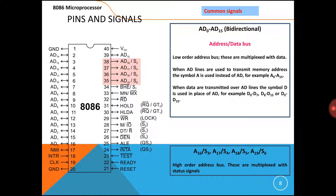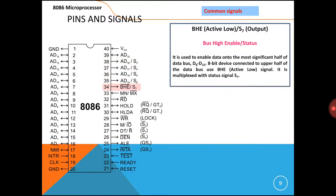During T1 state, address is available; from T2 to T4, status is available, indicating which segment register is presently accessed. S5 indicates the update status of the Interrupt Enable flag — at the beginning of each clock cycle, the IF flag status is updated in S5. S6 is always logic level zero and is not used.